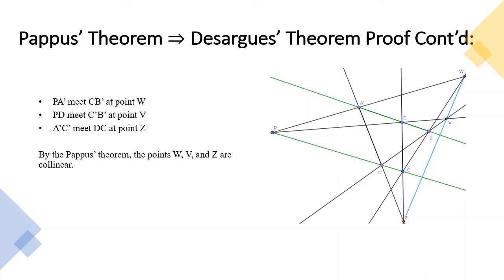Going back to our proof, we're now going to focus on the lines joining points A', D, and B', and another line joining points P, C', and C. Notice that the line PA' meets CB' at point W, the line PD meets C' at point V, and lastly the line A'C' meets at point Z. By the Pappus theorem, the points W, V, and Z are collinear.